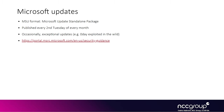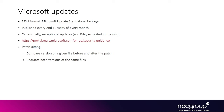Patch diffing consists of comparing a version of a file before the patch and after the patch. One requirement is that you need both versions of the file. Due to the nature of Microsoft updates, it's not always obvious how to get these two versions. In the past, an update would only contain a file if it had changed, so you'd easily find the patched version in the latest Patch Tuesday, but finding the version before the patch would require locating the last update that changed that file, which can be time-consuming.